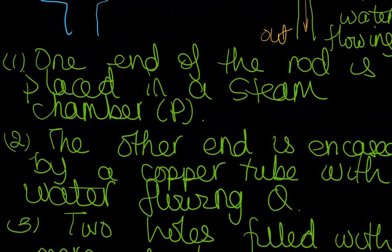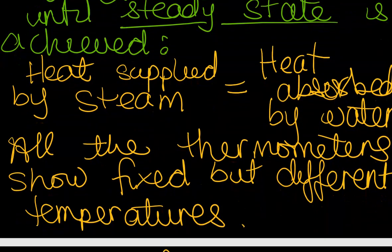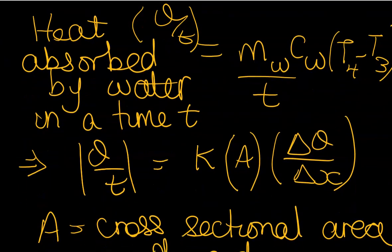And because of our initial steady state concept, we said that the heat supplied by the steam is equal to the heat absorbed by the water. So if we look at our equation, we are saying that mc delta theta over t, in a certain time we have a mass of water. We of course know the specific heat capacity of water to be 4,200 joules per kilogram per kelvin, and we have our change in temperatures.